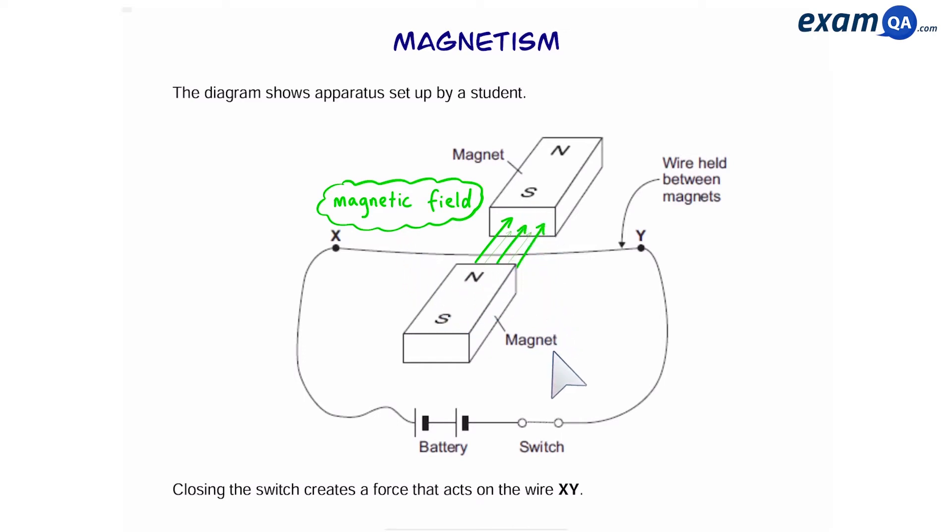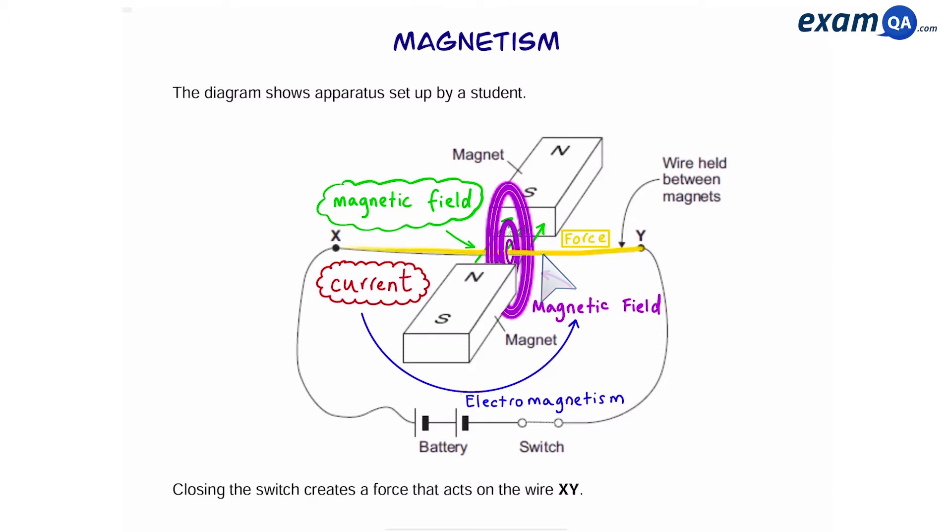If I close the switch down here, that means now we can have a current flowing through the circuit. This red arrow represents the flow of the current between the points X and Y. When you have a current flowing through a wire, that is going to create a magnetic field. Remember this is because of electromagnetism. So now we have two magnetic fields - one between the two magnets and the second one the magnetic field of the wire. When these two magnetic fields interact, that is going to create a force on the wire.